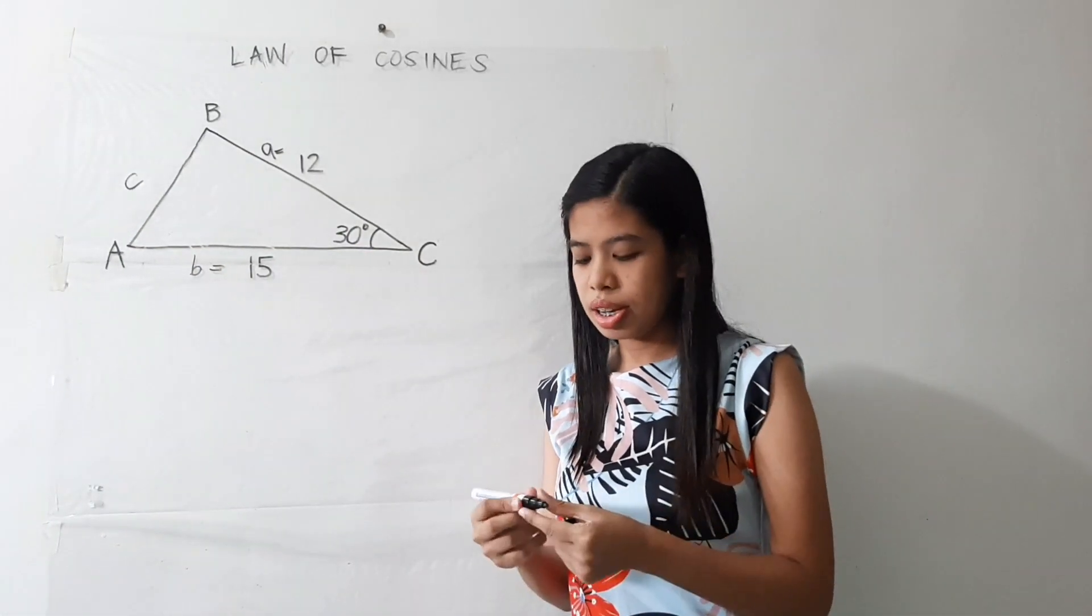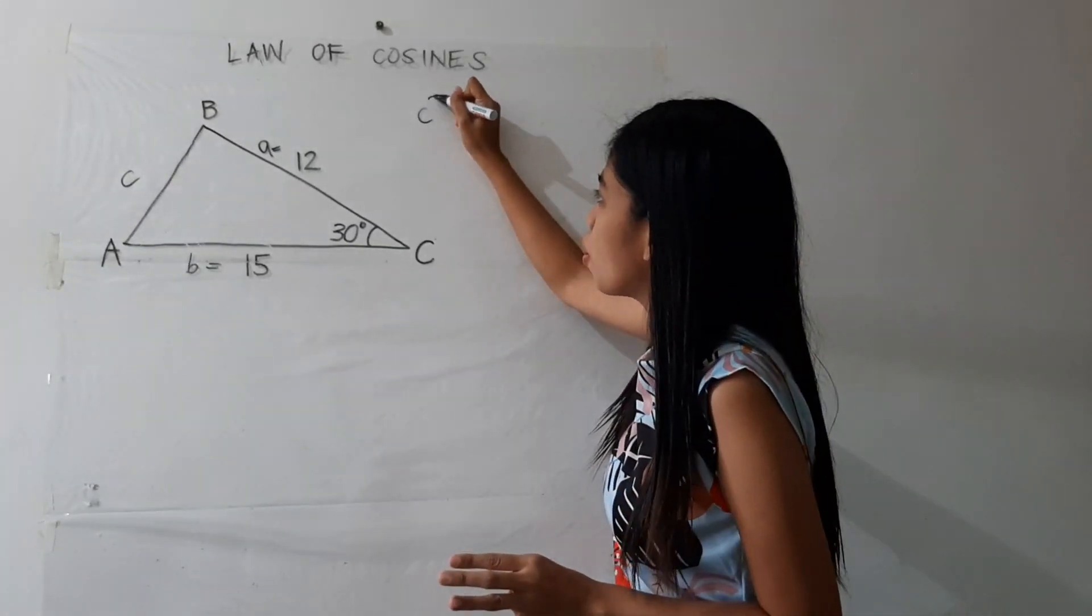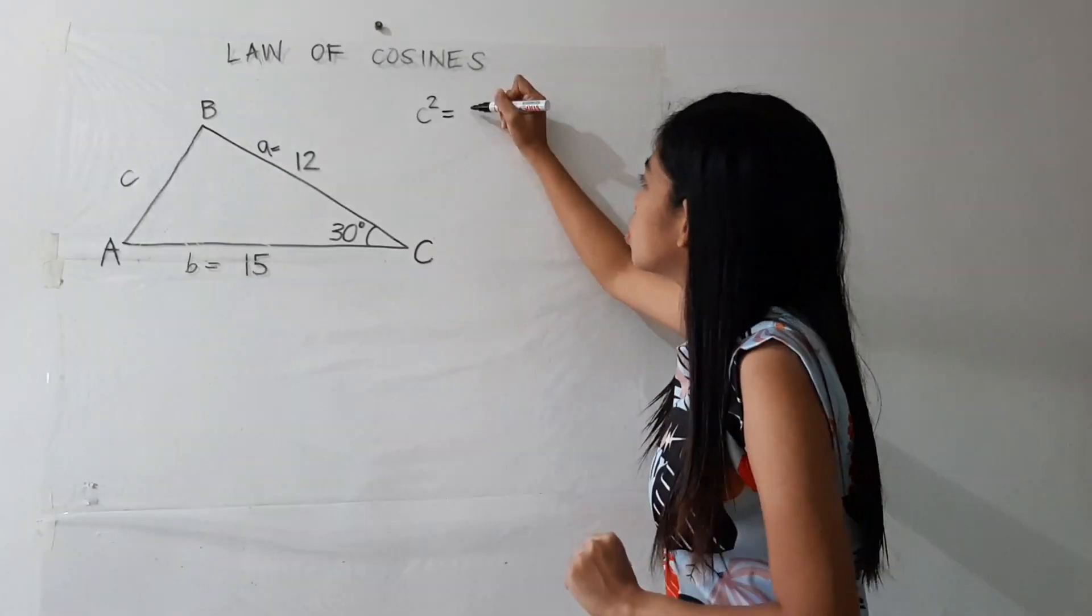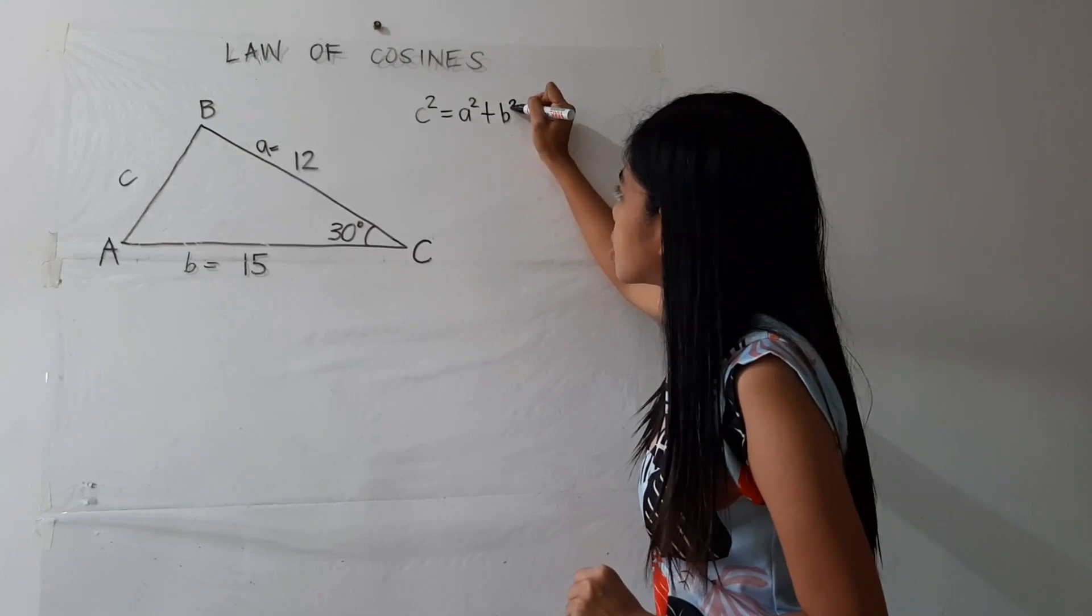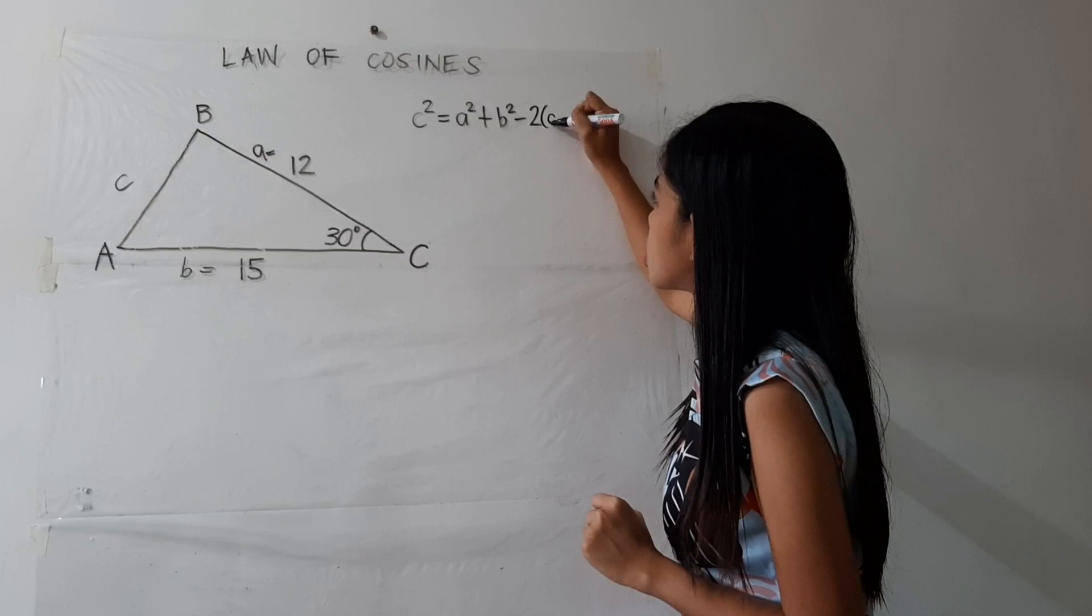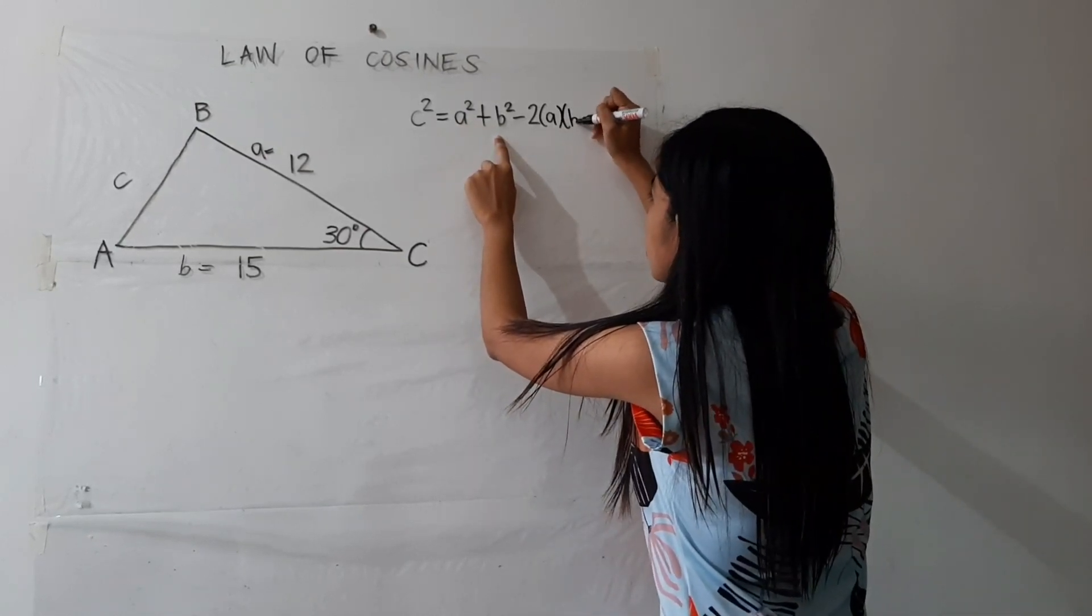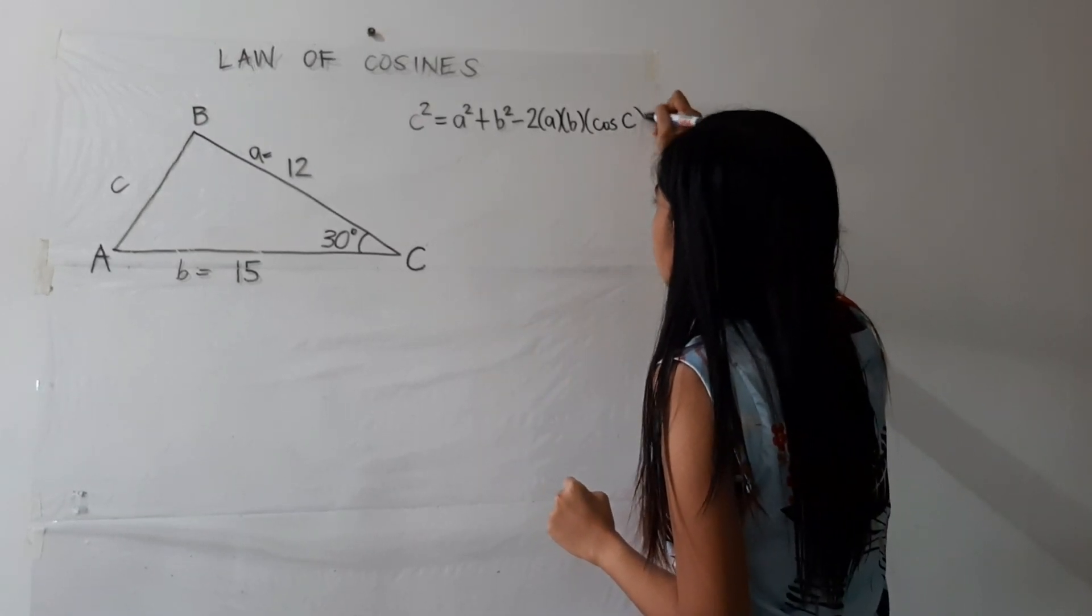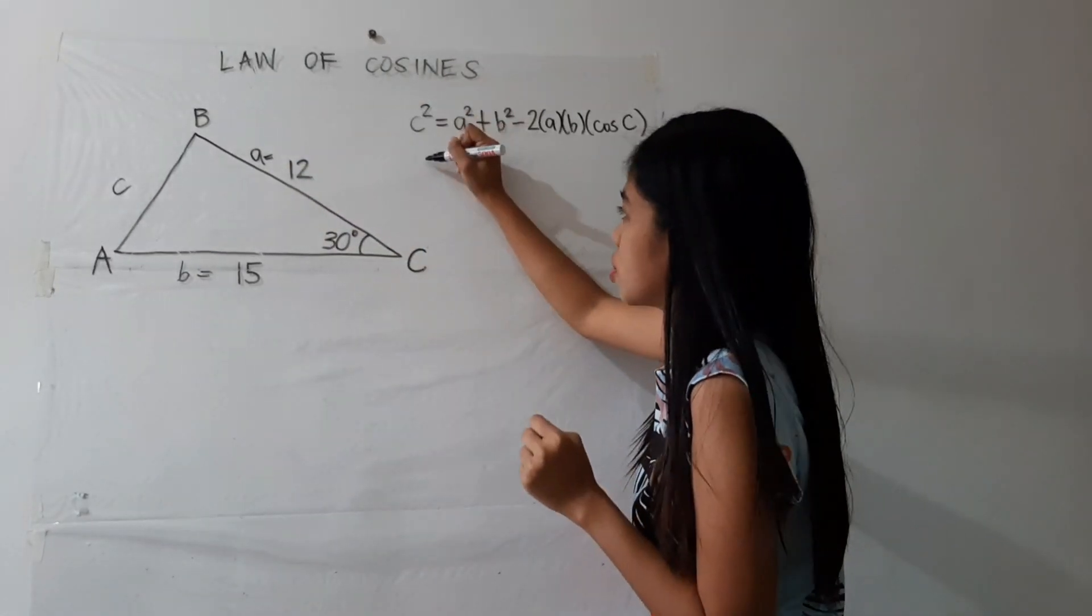So we can use here the law of cosines. So the law of cosines states that the square of side C is equal to the sum of the square of sides A and B minus twice the product of side A and side B times the cosine of angle C.